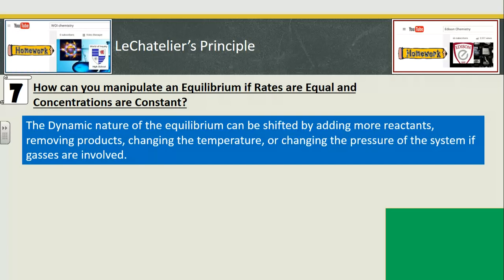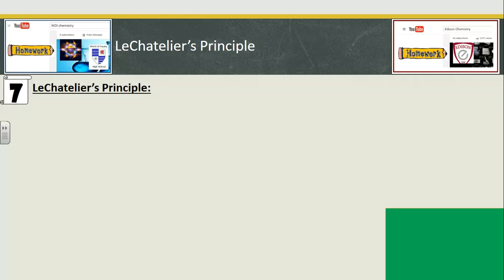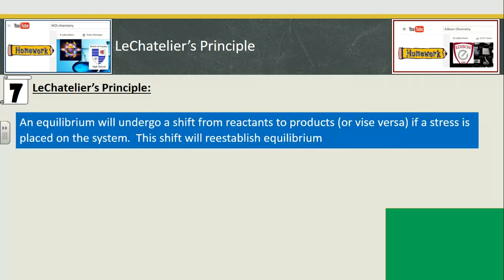Then things shift and change — air conditioning comes on and Classroom B gets really cold, and the heat comes on and Classroom A gets really warm. Students from Classroom B migrate back to Classroom A, and the equilibrium has been shifted. At the end, maybe there are 15 students in Classroom A and five students in Classroom B. Le Chatelier's Principle says that an equilibrium will undergo a shift to form reactants to products, or vice versa, if a stress is placed on the system. The shift will reestablish the equilibrium.